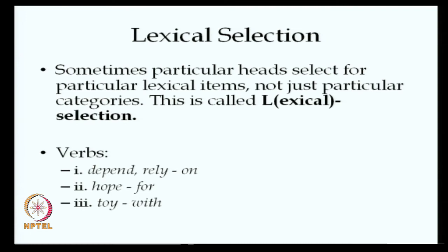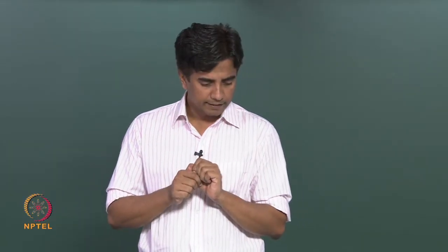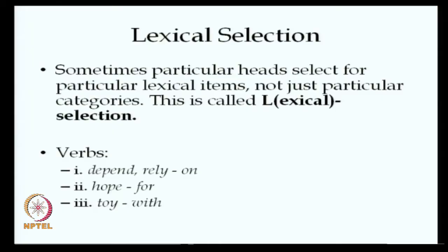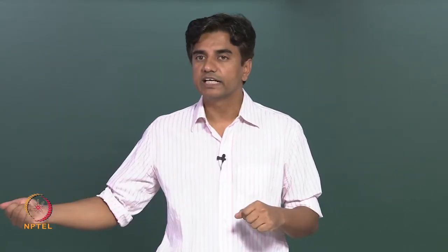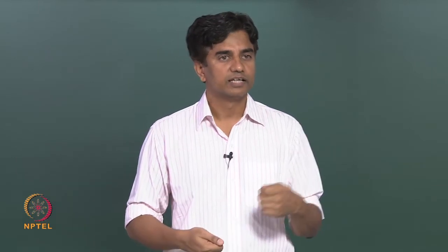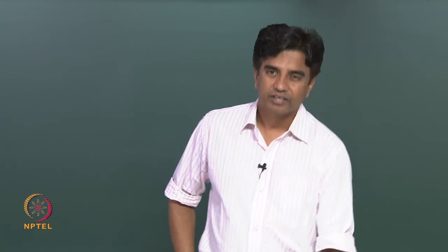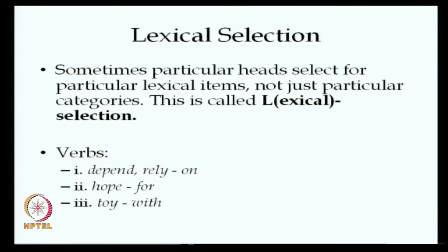There is another aspect called lexical selection. Some terminal elements like a verb or noun will always select a particular type of other element. For example, the verbs 'depend' and 'rely' will only take the preposition 'on' — we can only say 'depend on' or 'rely on.' Such restrictions are called lexical selection restrictions. A verb like 'hope' will only select 'for,' and a verb like 'toy,' when used as a verb, can only select the preposition 'with.'